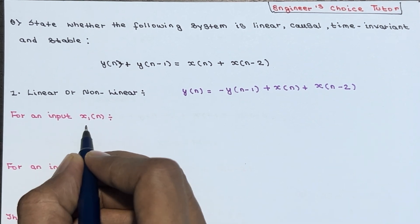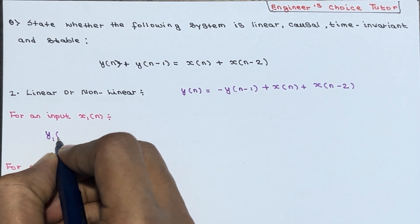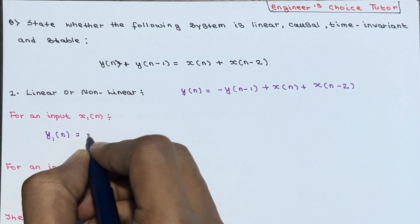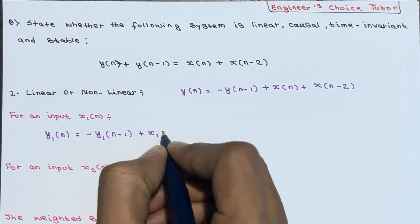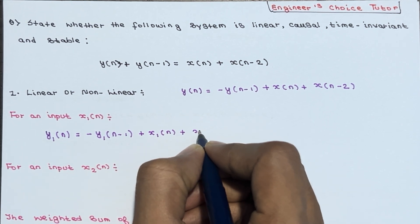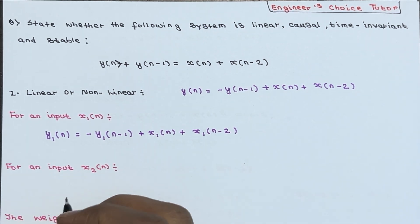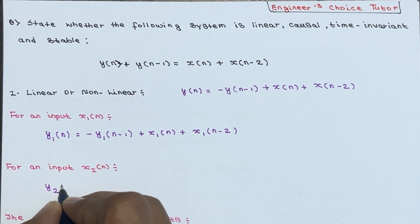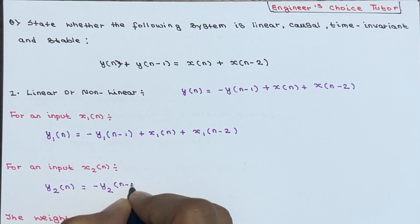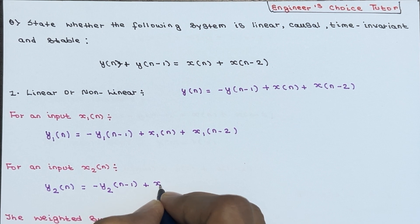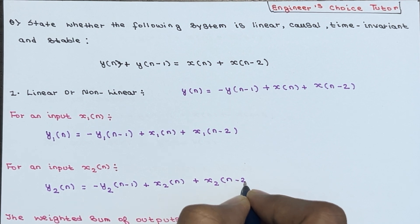Suppose for an input x1(n), the output will be y1(n) = -y1(n-1) + x1(n) + x1(n-2). Now for an input x2(n), calculate the output y2(n) = -y2(n-1) + x2(n) + x2(n-2).